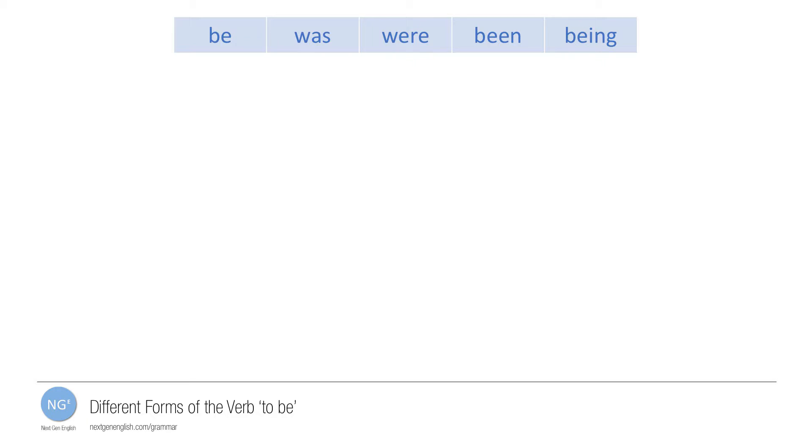So what about the other forms? Be is the infinitive form used with or without to. For example, this could be dangerous, or I don't want to be famous.